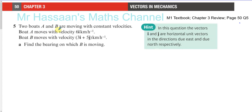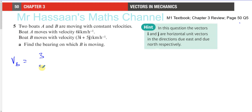So two boats, A and B, are moving with constant velocities. Boat A moves with a velocity of 6i km/h. Boat B moves with a velocity of 3i plus 5j km/h. Find the bearing on which B is moving. So the velocity of boat B is 3i plus 5j, and we need to find what bearing that represents.